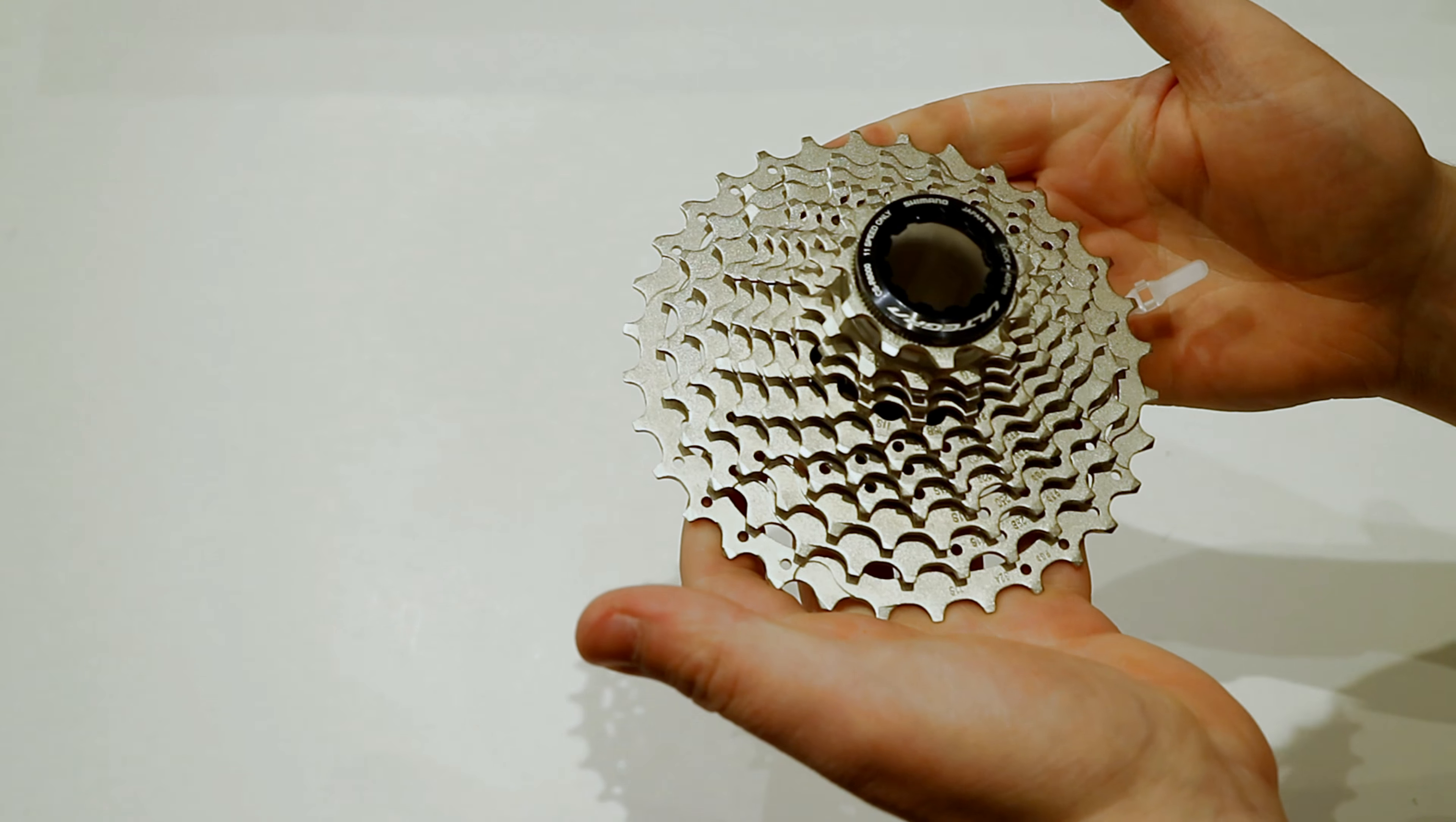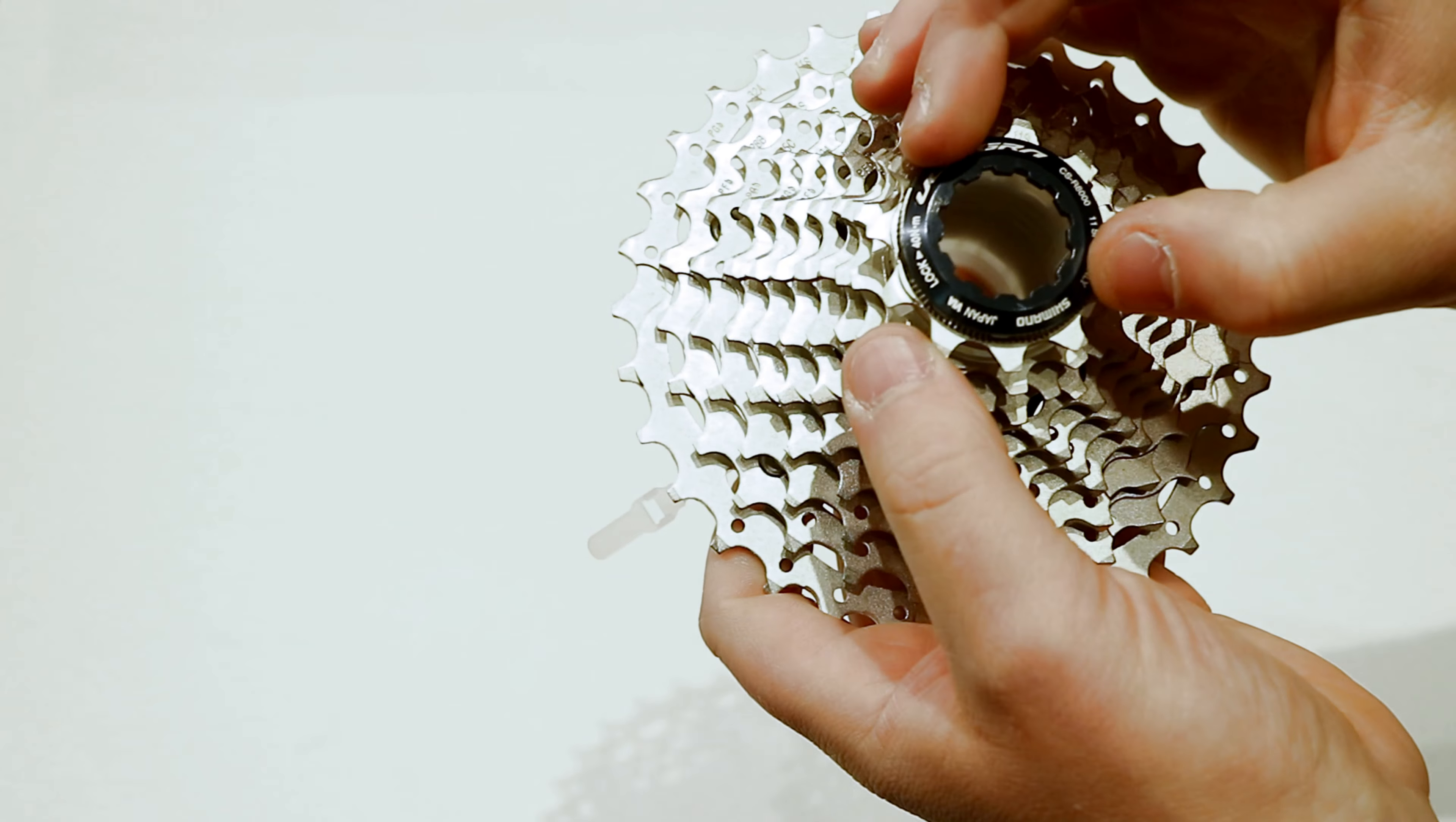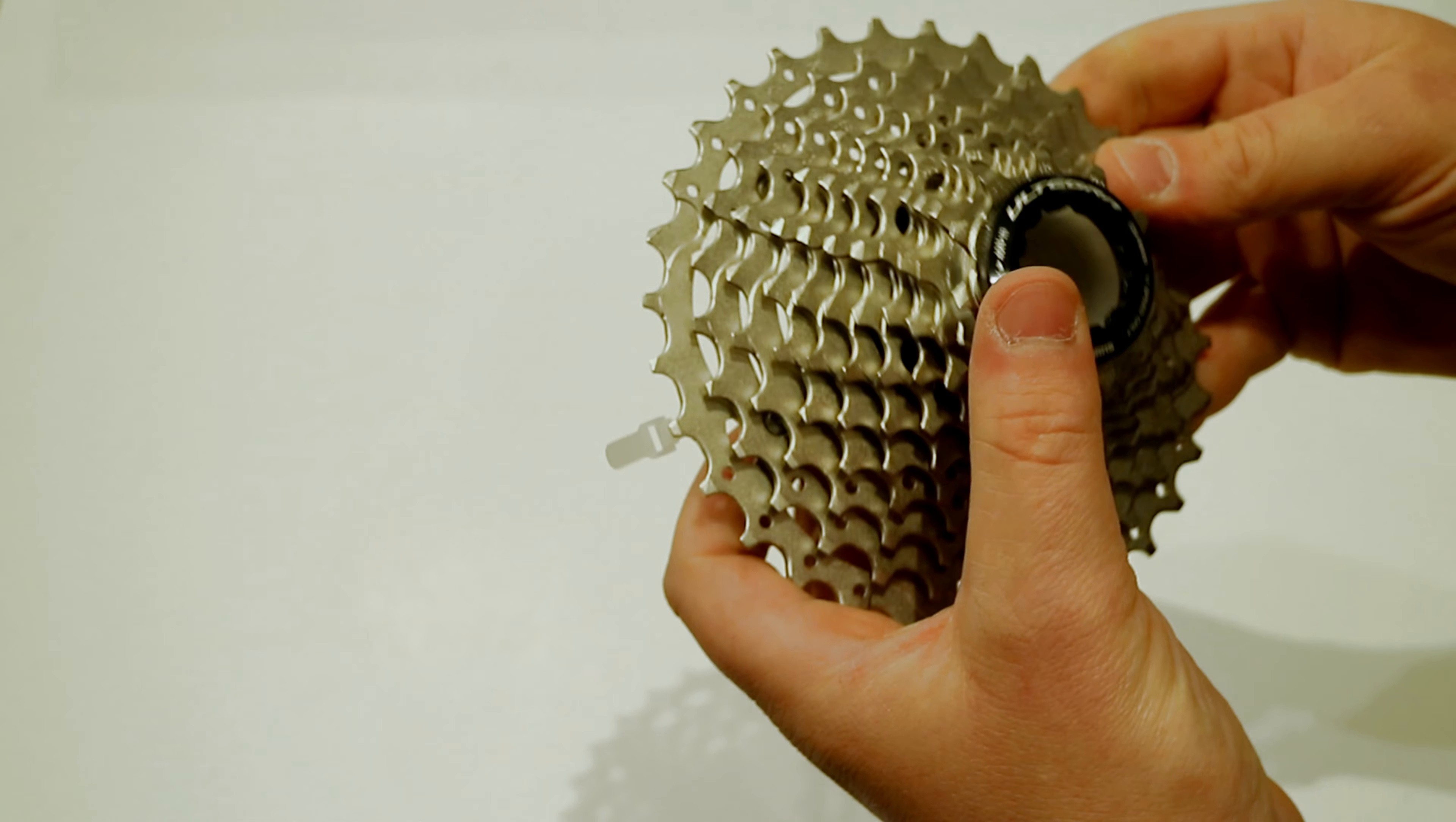So with the cassette popped out of its packaging here, we can take a look at exactly what it looks like. You can see you've got an aluminum lock ring here, and then it's going to have steel cogs going up with a nice coating to it.